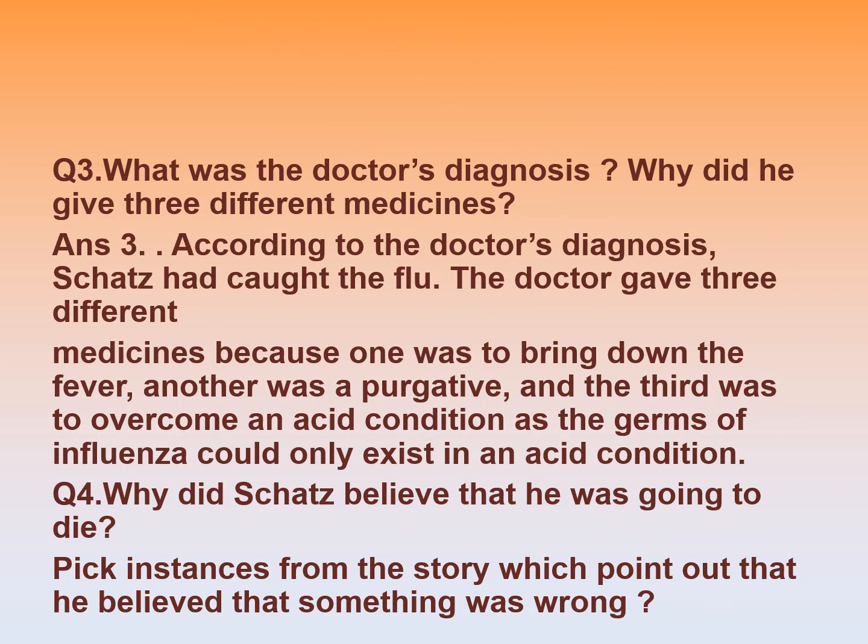Question 3: What was the doctor's diagnosis? Why did he give three different medicines? According to the doctor's diagnosis, Skatz had caught the flu. The doctor gave three different medicines because one was to bring down the fever, another was a purgative, and the third was to overcome an acid condition, as the germs of influenza could only exist in an acid condition.